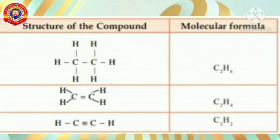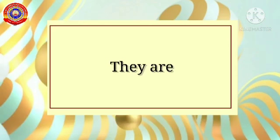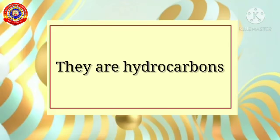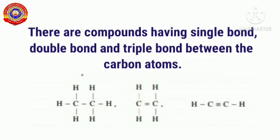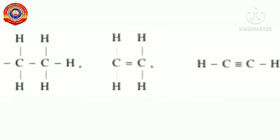What are the characteristics of these compounds? Let's analyze. These compounds are called hydrocarbons. Hydrocarbons are compounds containing only carbon and hydrogen. These hydrocarbons can form compounds with single bond, double bond, and triple bond between the carbon atoms.